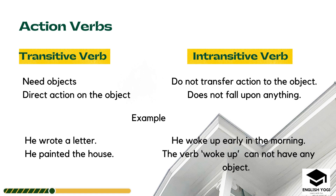In simple terms, a transitive verb is a word that requires an object. On the contrary, an intransitive verb does not need an object; it does not transfer action to an object. For example: 'He woke up early in the morning.' The verb 'woke up' cannot have any object in the sentence, so it is an intransitive verb.